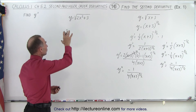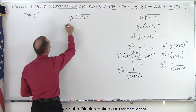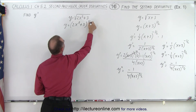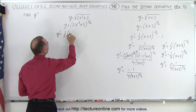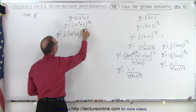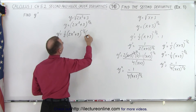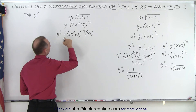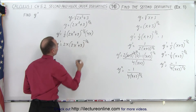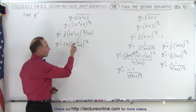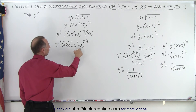Now let's do it again with something a little more complicated, where we have 2x squared inside the radical. We first convert to exponential form, so y equals the quantity 2x squared plus 3 to the 1 half power. Taking the first derivative, y prime equals 1 half times 2x squared plus 3 to the minus 1 half power, then we multiply by the derivative of what's inside, which is 4x. Simplifying, 4 divided by 2 is 2, so y prime equals 2x times 2x squared plus 3 to the minus 1 half power.